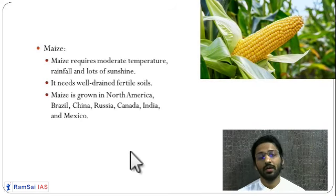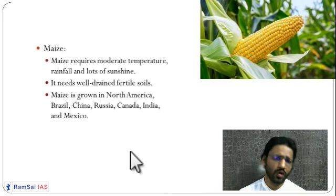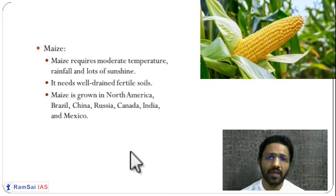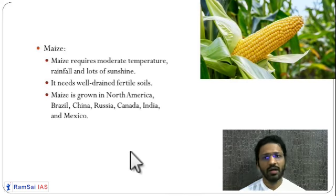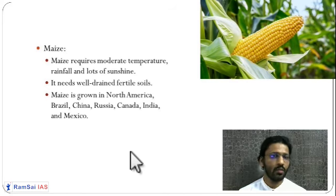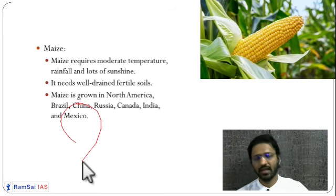Maize is a very important crop used as fodder for animals as well as for human beings. Maize flour is used for various purposes. It requires moderate temperature and moderate rainfall, but needs well-drained fertile soil — the soil should not hold water. USA, India, Russia, China, and Mexico grow huge amounts of maize; Mexican maize varieties are specifically famous.